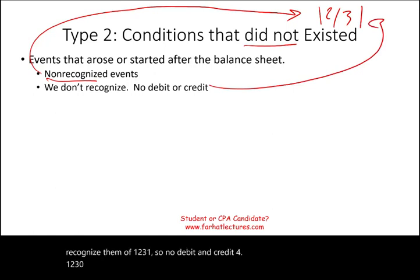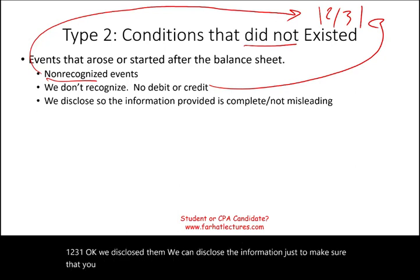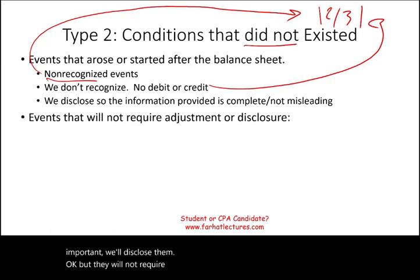For Type 2 events, we disclose them — we can disclose the information to make sure that, if it's relevant and not misleading, those events are communicated. If they're important, we will disclose them. But they will not require any adjustments — just disclosure if we choose to. They don't require disclosure, but if we want to, we can always disclose.